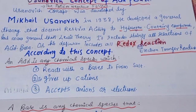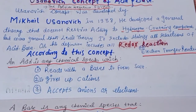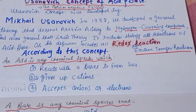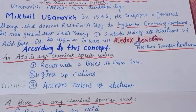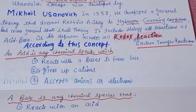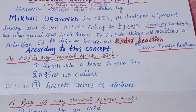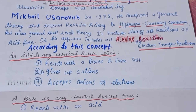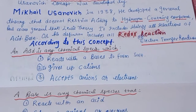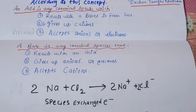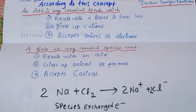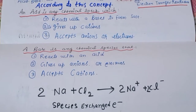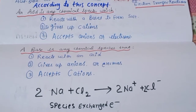According to the Usanovich concept, an acid is a chemical species which reacts with a base to form a salt. Acids give up cations, accept anions, or accept electrons. A base is a chemical species that reacts with an acid; the base can give up anions or electrons, or the base can accept a cation.